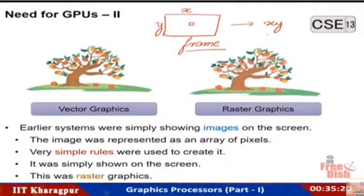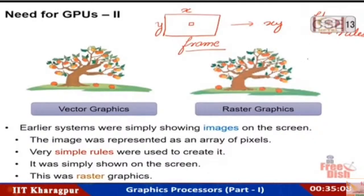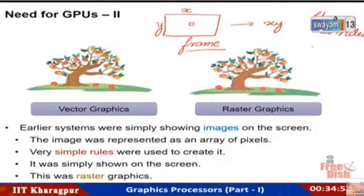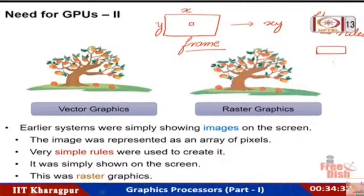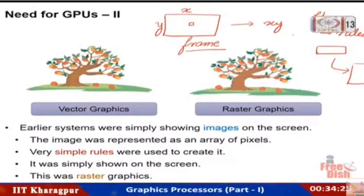Modern graphics is quite different. We have to construct the image from a set of rules the user writes. For example, a character running in a city with police cars — the user defines the objects, their interactions, and effects such as shadows and illumination. The final scene must be constructed from those rules. Whatever the user does is not specified in terms of coordinates, but in terms of rules.